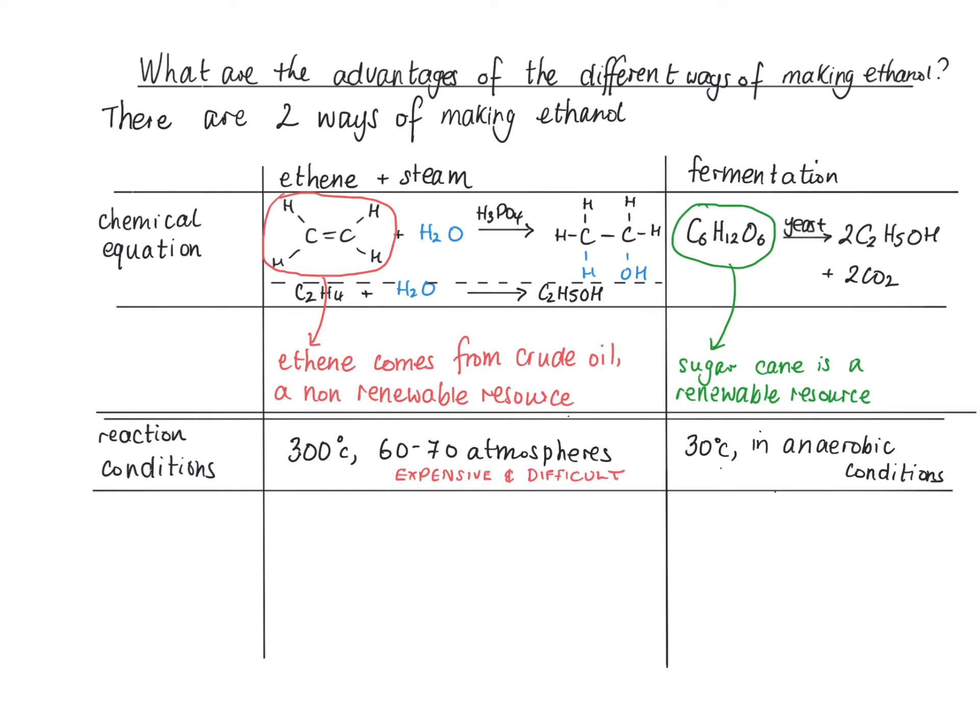Compare that to fermentation. Fermentation can be done at 30 degrees in anaerobic conditions where there's no oxygen. Below 30 degrees C, the reaction is very slow. Above 30 degrees C, the enzymes start to denature, which means that the yeast becomes less useful, so the reaction doesn't happen.